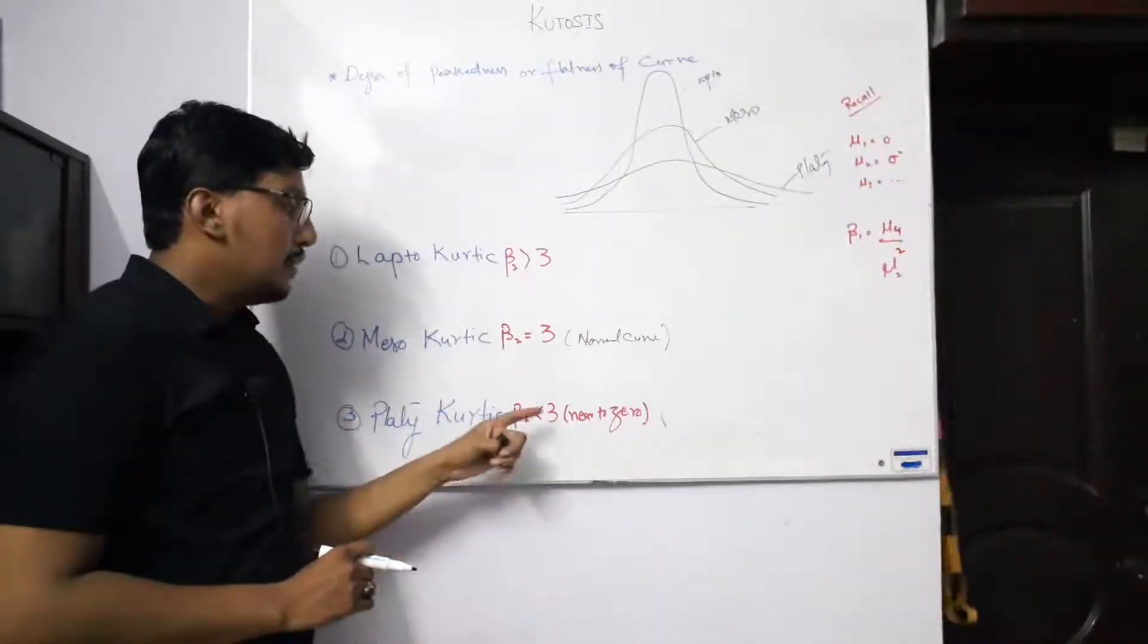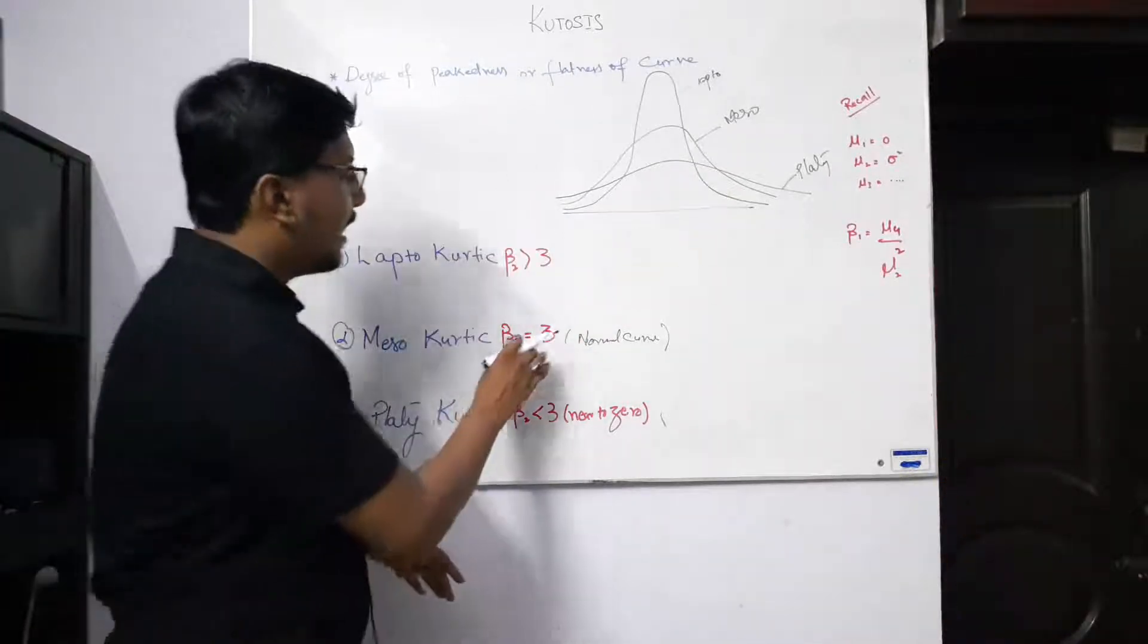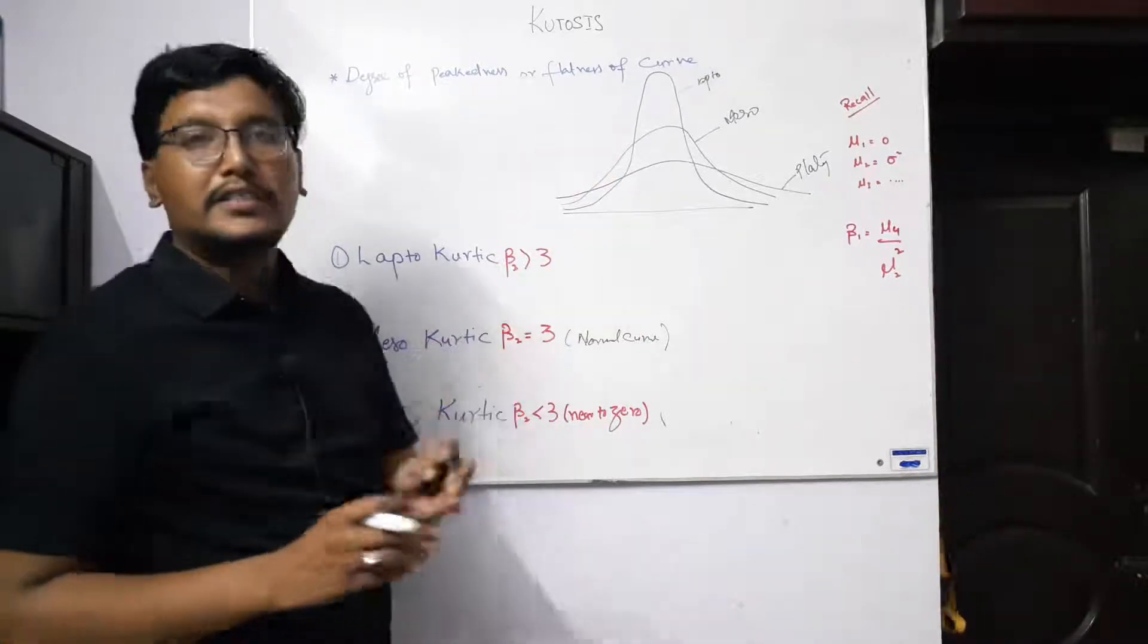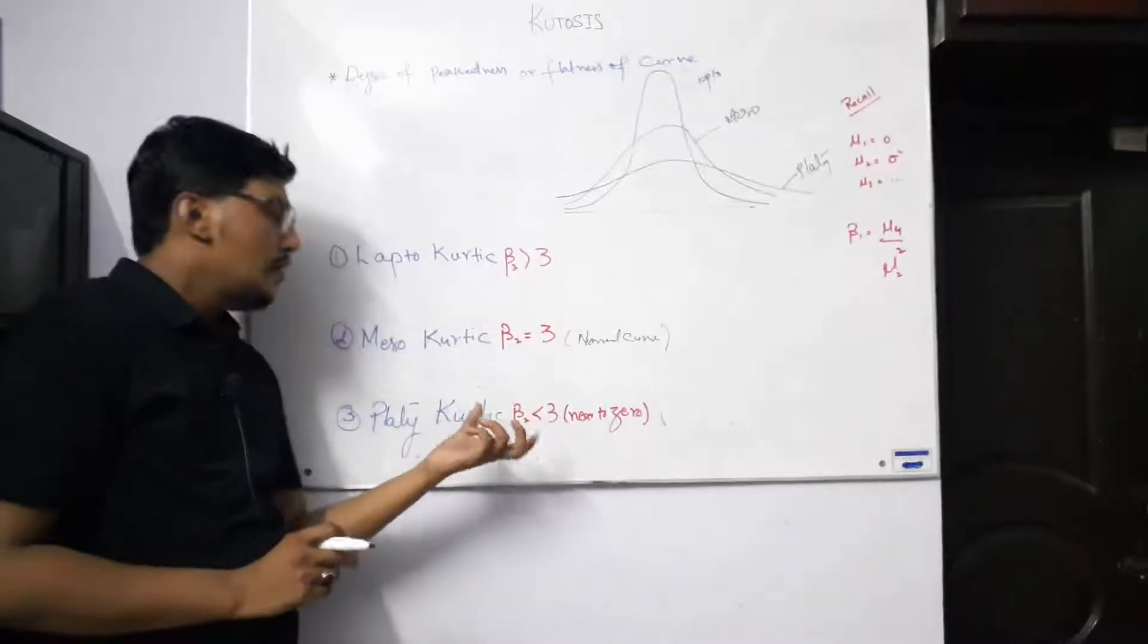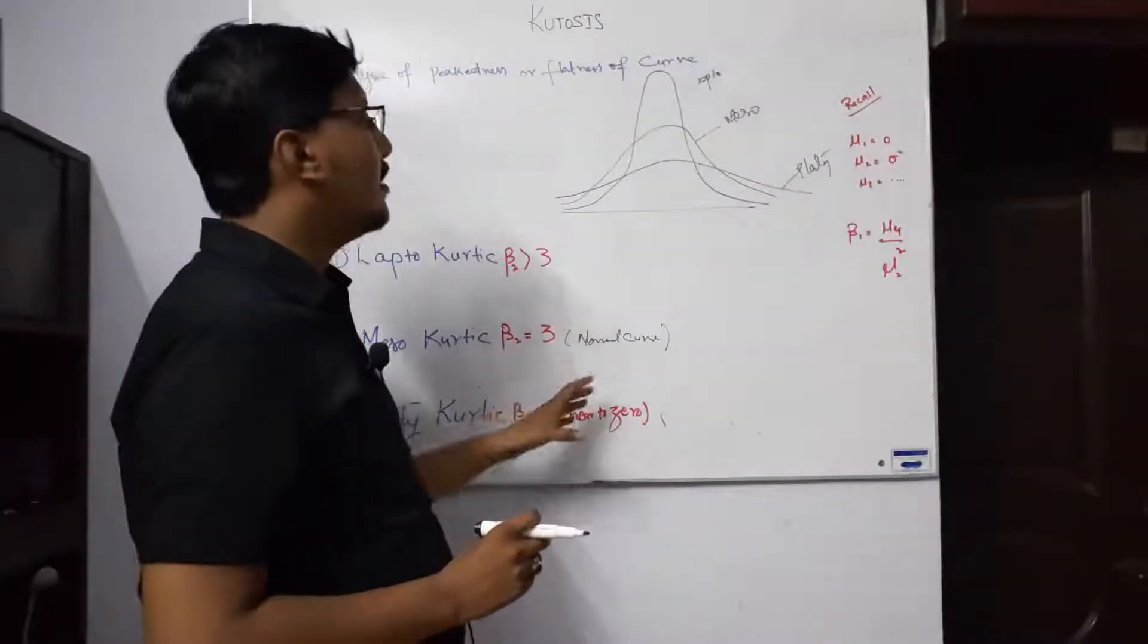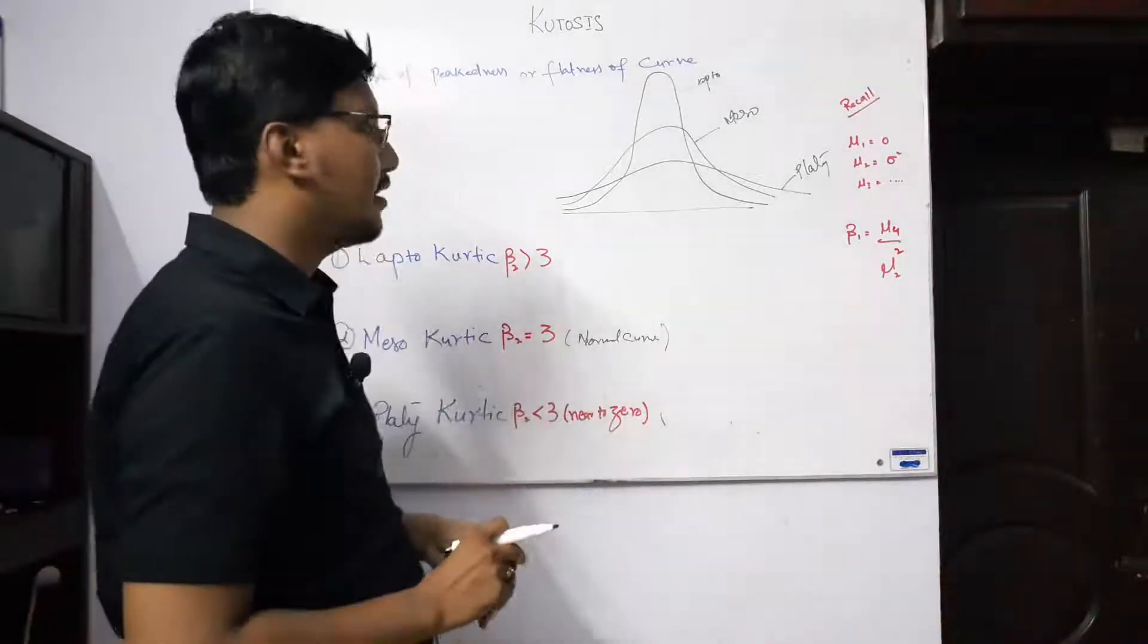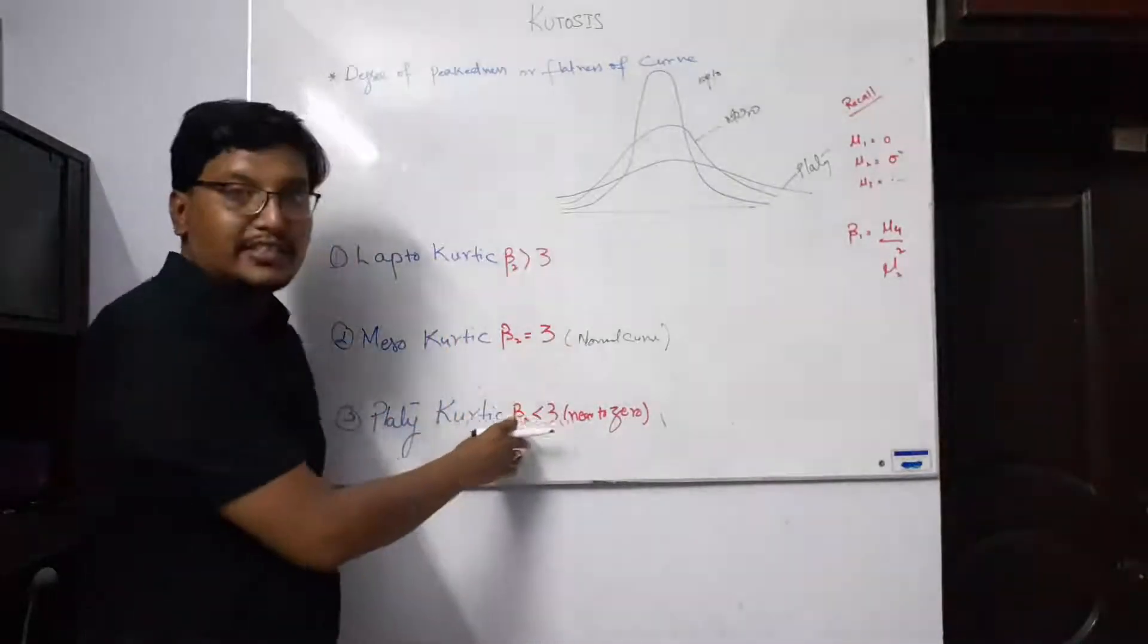And if our answer of beta 2 is less than 3 but near to 0, it becomes platy. That means if your answer is 2.7 or 2.6, then 2.6 to 2.7 indicates mesokurtic. But if you have answer 0.3, 0.9, or 1.1, we can say that our data distribution peakedness is platy if the answer is around 0 or 1, but less than 3.